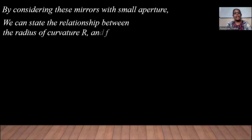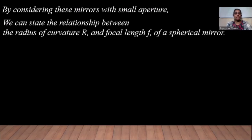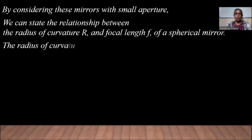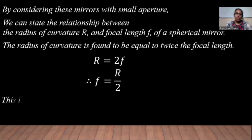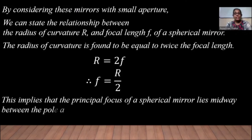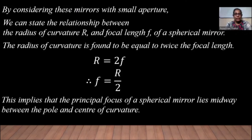By considering mirrors with small aperture, we can state the relationship between the radius of curvature R and the focal length F of the spherical mirror. The radius of curvature is found to be equal to twice the focal length: R = 2F, and therefore F = R/2. This implies that the principal focus of a spherical mirror lies midway between the pole and the center of curvature.